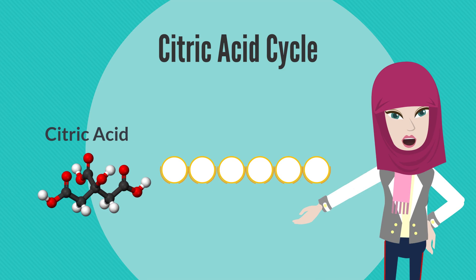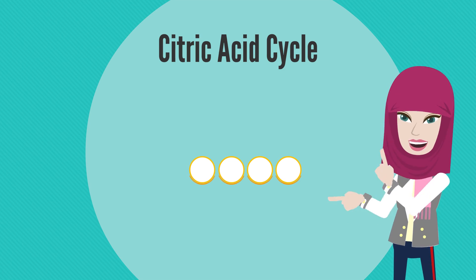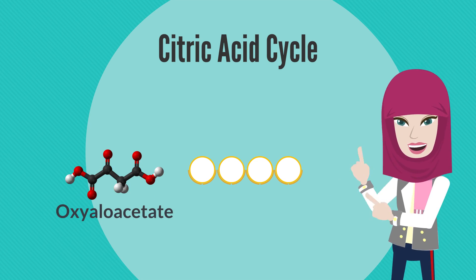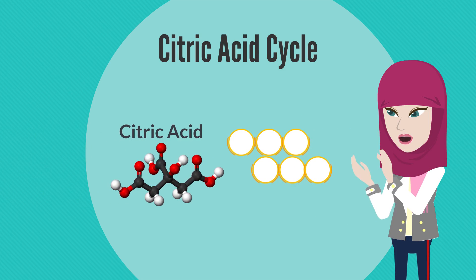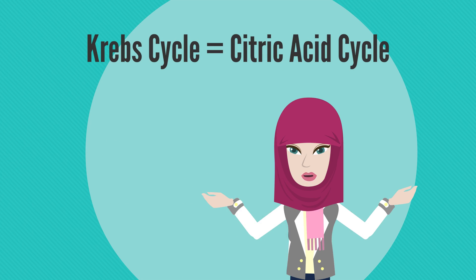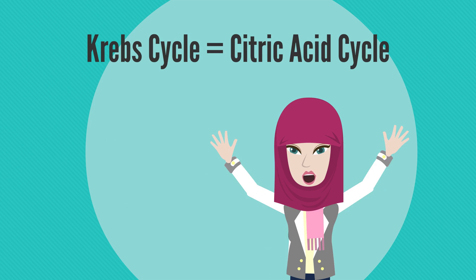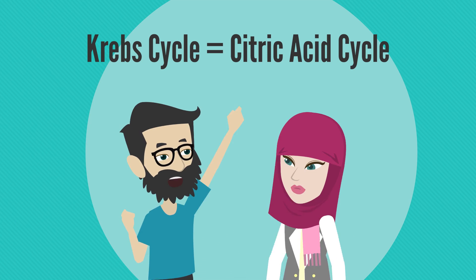From this point on, citric acid is oxidized over a bunch of steps, losing carbons left and right until it eventually becomes oxaloacetate again. And then the cycle continues as it joins with acetyl-CoA to form citric acid.